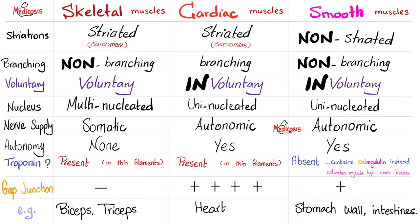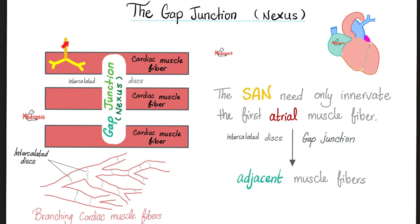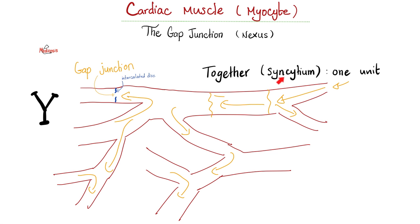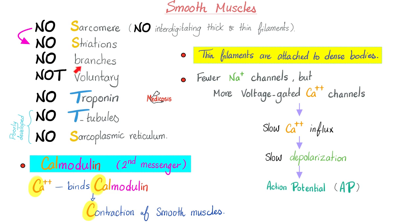Do they have troponins? No, they have calmodulin instead. Calmodulin. It's a protein that modulates calcium. Do they have gap junctions? Yes, they do. We call them nexus. What's the purpose of the gap junction? It allows one nerve fiber to supply many muscle fibers because the muscle fibers communicate with one another. There is a gap between them, gap junction known as nexus, so that all of these fibers can contract together as a singular unit known as syncytium from synchrony. Smooth muscles: no sarcomere, no striations, no branches, involuntary, no troponin, no T-tubule, no sarcoplasmic reticulum. Instead, we have a robust calcium calmodulin system, which results in contraction of smooth muscles or relaxation. We have dense bodies. We have fewer sodium channels, but we have more calcium channels.